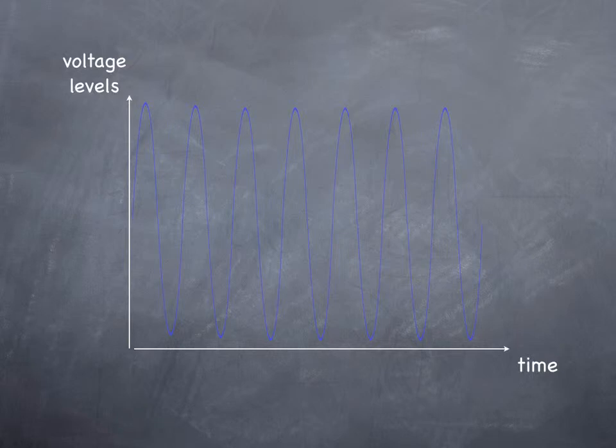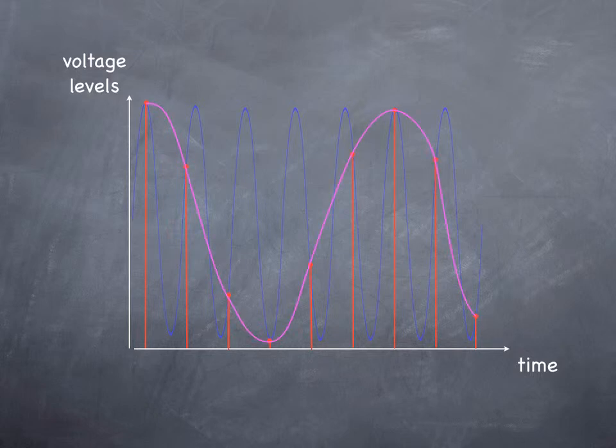Failing to sample at a high enough frequency can, however, create other problems. Consider this high frequency analog wave, which I will sample at a rate less than twice its frequency. When the samples are put back together, the resulting wave looks nothing like the original. In fact, not only is the fine detail missing, but now a low frequency wave has been introduced, which was not there previously. This is known as aliasing and is a common side effect when sampling rate is too low for a given signal.